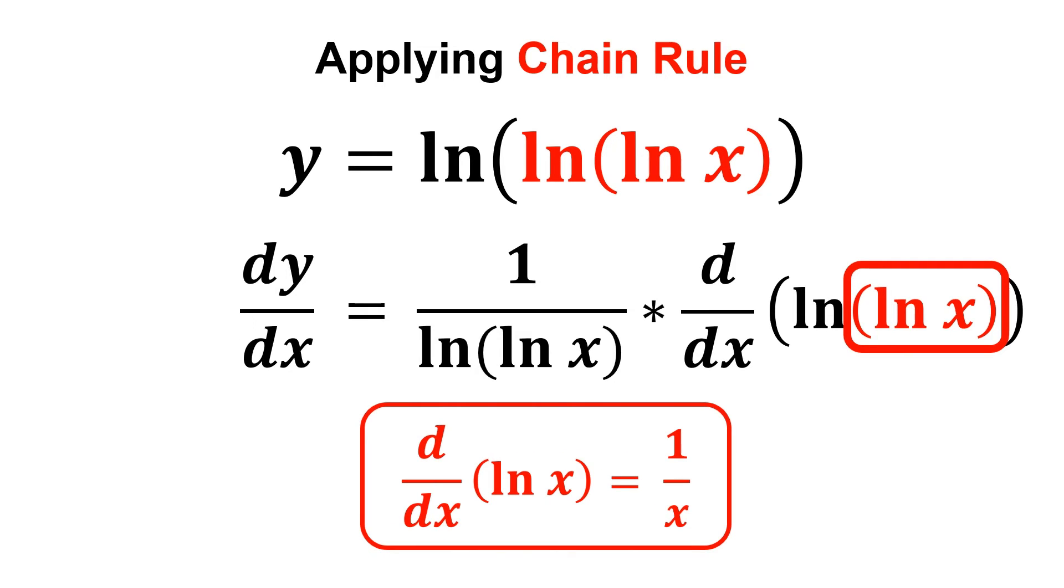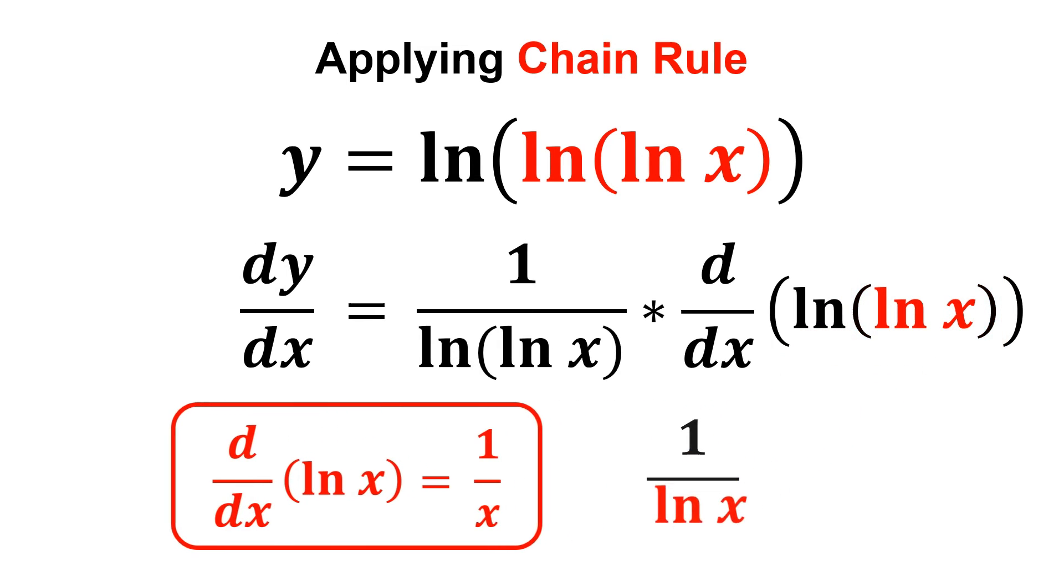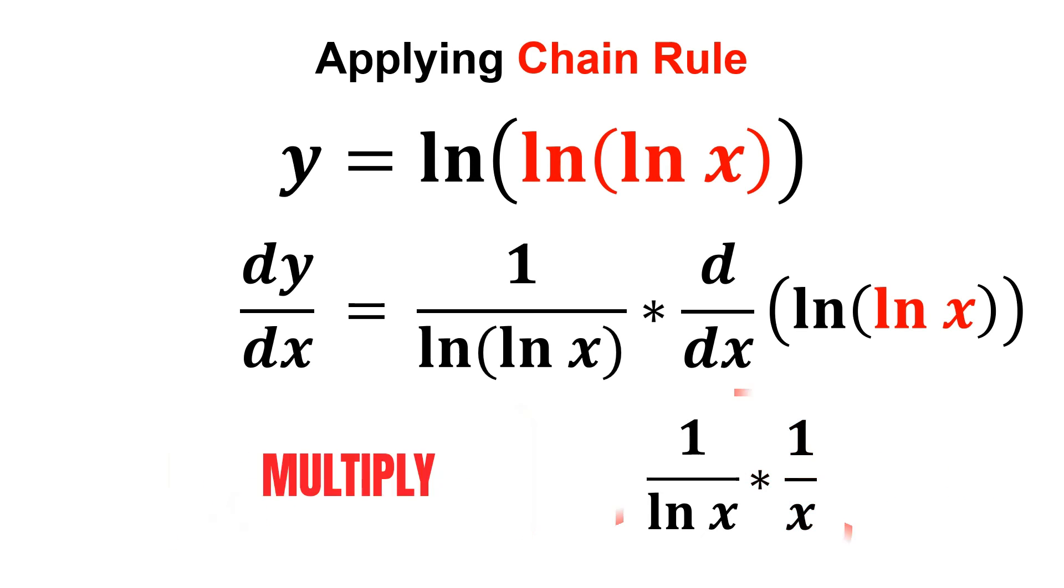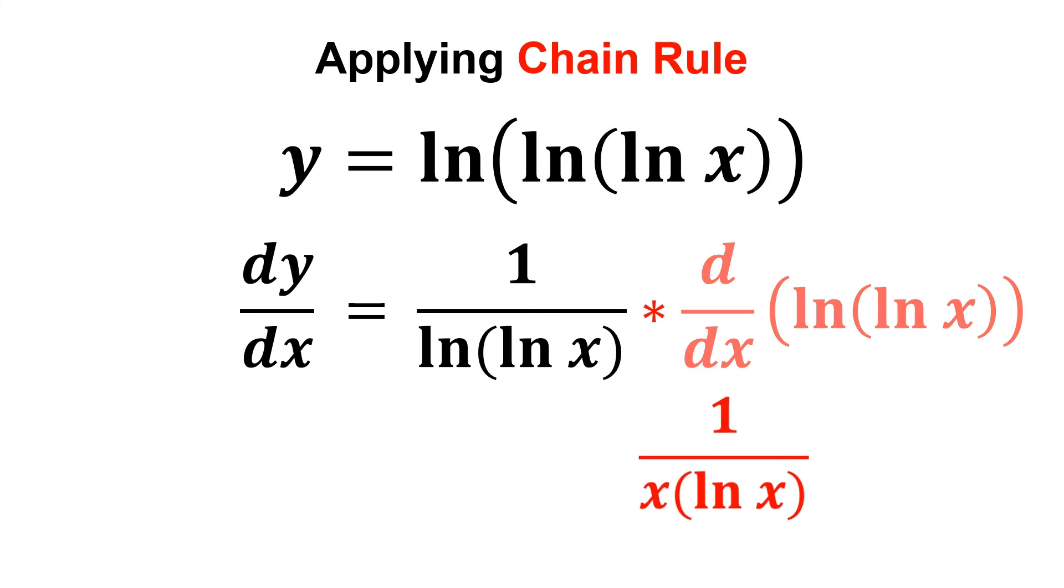The same thing is applied here in this case. We know that the derivative of ln x is 1 over x. As now we have ln of ln x instead, so we will be getting 1 over ln x in this case. Then, we multiply by the derivative of the inner function, ln x, in which we will be getting 1 over x. Multiply these two terms together and we have found the derivative of ln of ln x.